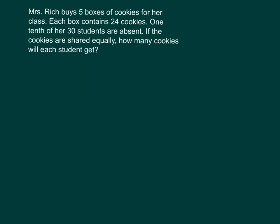Let's look at one final problem. Mrs. Rich buys five boxes of cookies for her class. Each box contains twenty-four cookies. One-tenth of her thirty students are absent. If the cookies are shared equally, how many cookies will each student get? You must be present to get a cookie. Let's write out the focused answer: each student will get blank cookies.